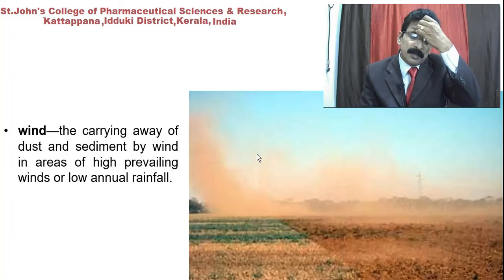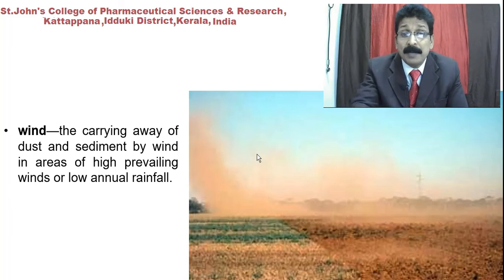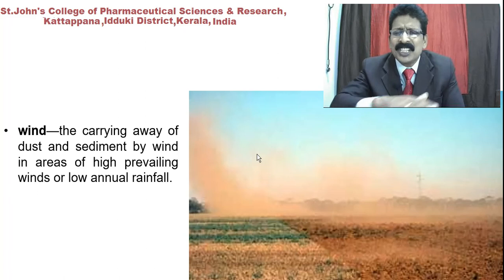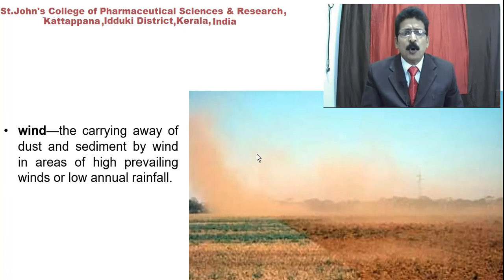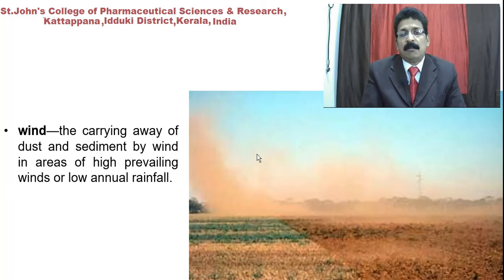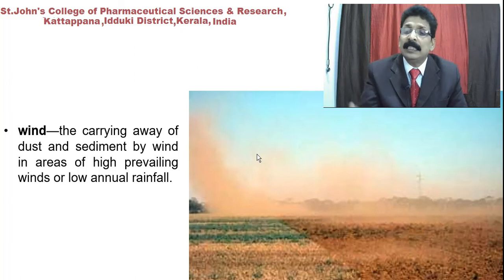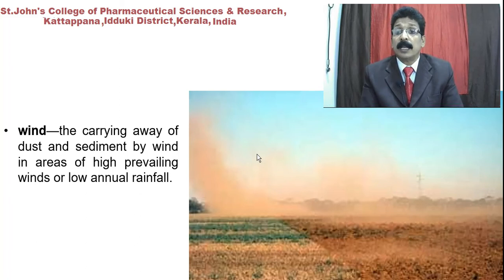Wind can also cause damage through erosion. It carries away dust and sediment over the plants — you can see them covered in reddish color, the green plants covered by sand carried by wind. This occurs in areas of high prevailing winds or low annual rainfall, causing wind to carry soil and deposit it over plants in the cultivated area.